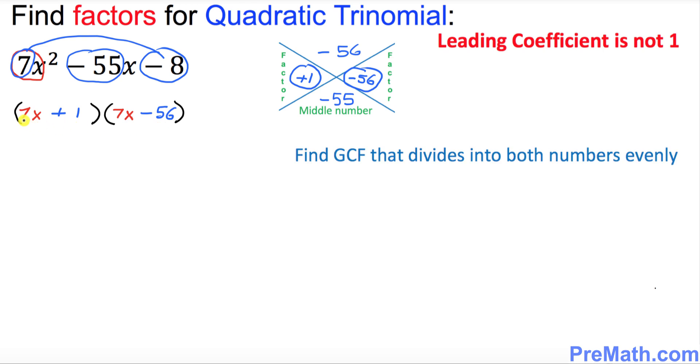Now let's look at this very first parentheses. Look at the numbers 7 and 1. There's nothing in common, just leave them alone. Let's look at the second parentheses. We have two numbers, 7 and 56.